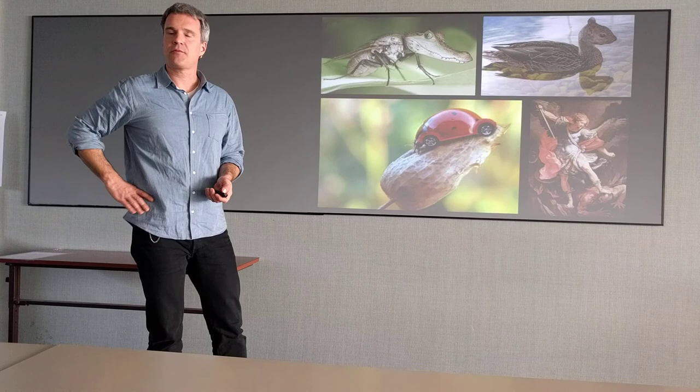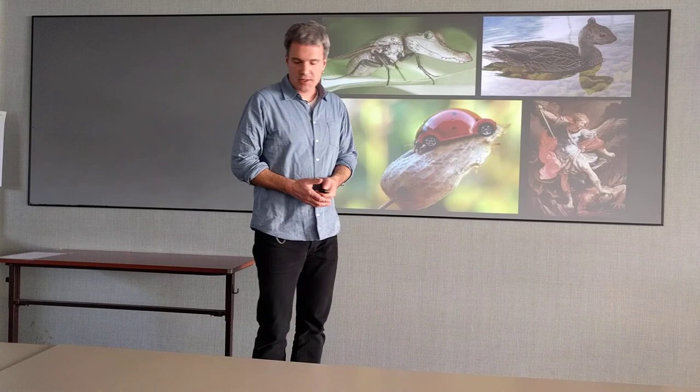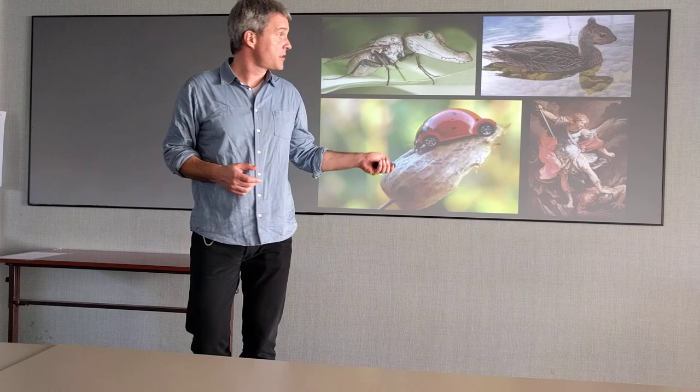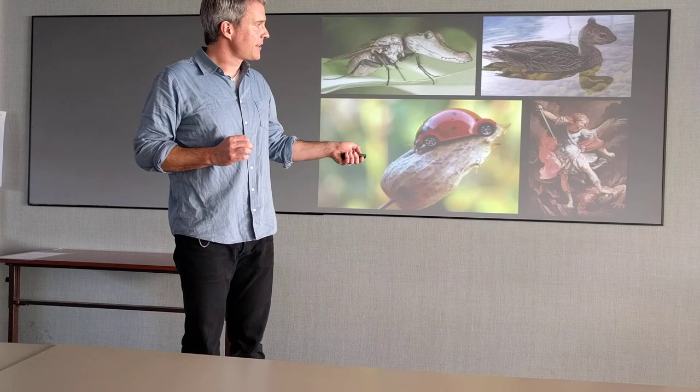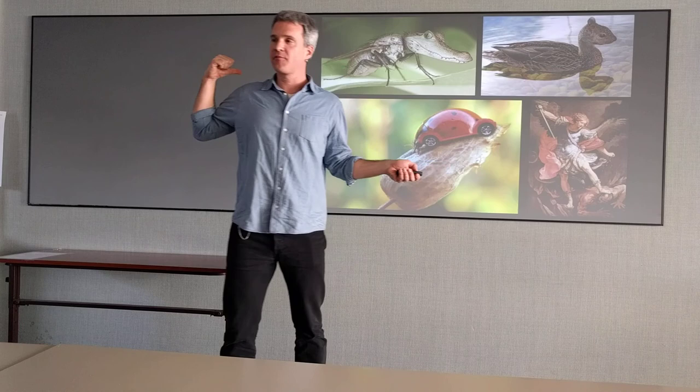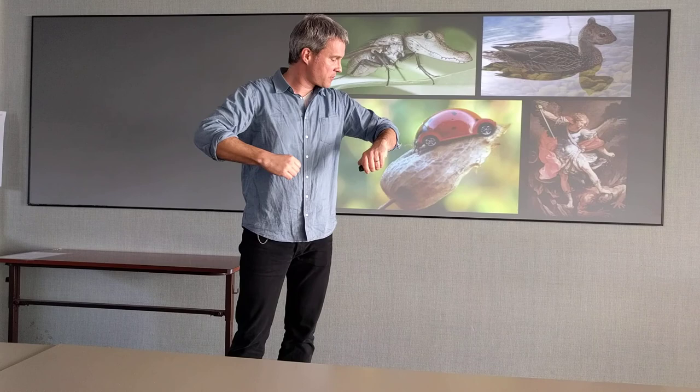The classic example, if you're an evolutionary developmental biologist, you can explain to people very easily why angels don't exist. Because there are no vertebrates that have hind legs, forelimbs, and a pair of wings. All flying vertebrates have transformed their forelegs into wings. And the reason for that is not adaptive, but physical. There is only one attachment point - your shoulder girdle.